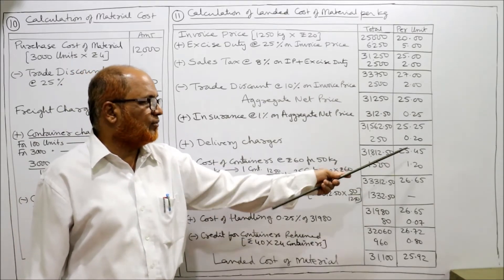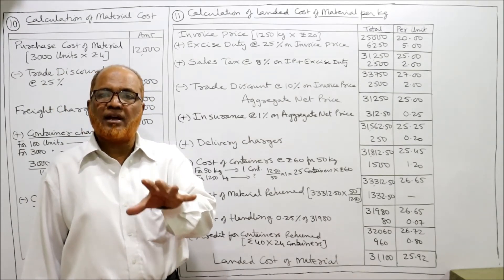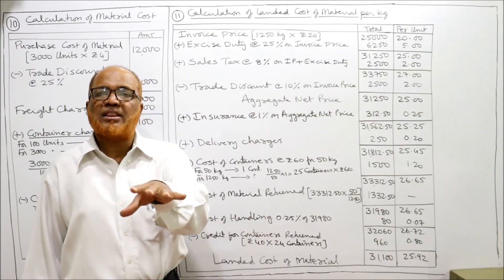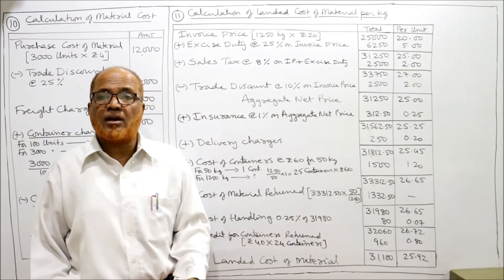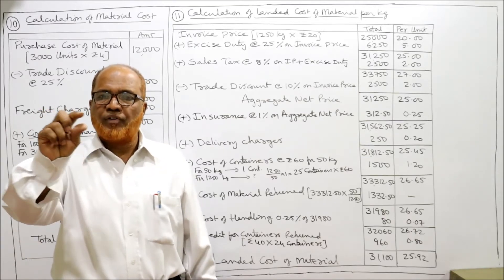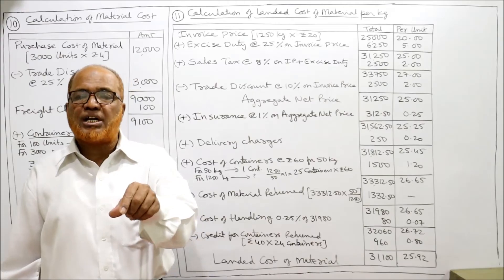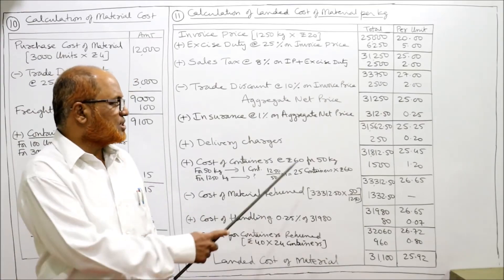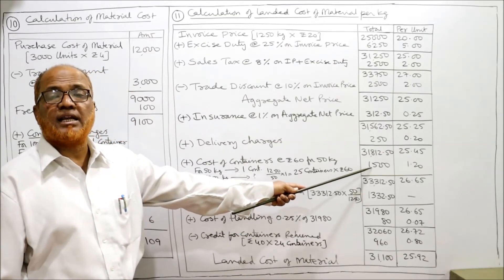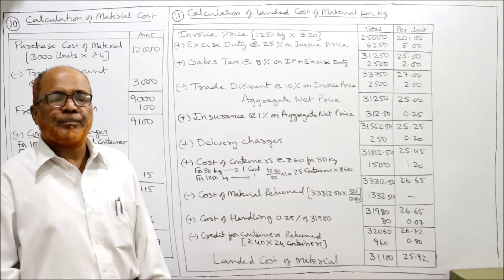Now we add cost of containers. One container is required for 50 kg, and we are purchasing 1250 kg, so 1250 ÷ 50 = 25 containers. Each container costs 60 rupees, so 25 × 60 = 1,500 rupees total container cost. Per kilogram: 1,500 ÷ 1250 = 1 rupee 20 paisa per kilogram.